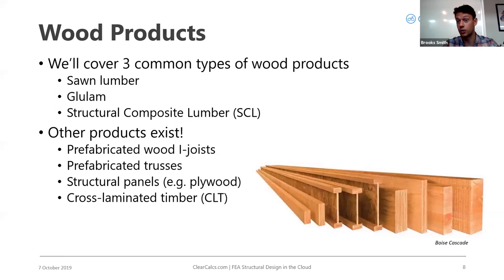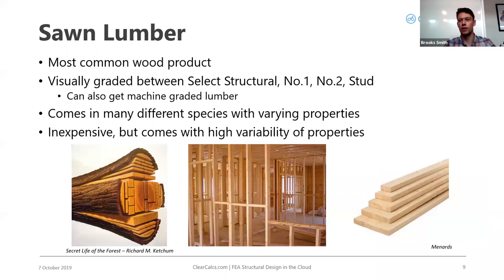There are also other wood products: I-joists used in homes for longer spans, prefabricated trusses often used in roofs, structural panels like plywood or oriented strand board used for shear walls or flooring, and cross-laminated timber, which is growing in North America — it uses regular sawn lumber made into big panels for walls or floors with high strength and great aesthetics.